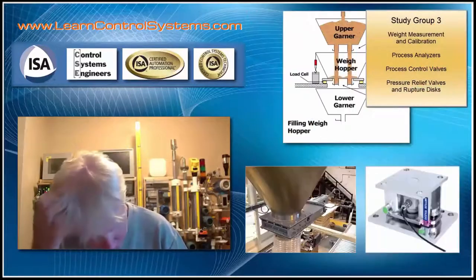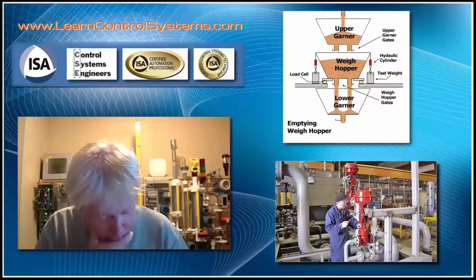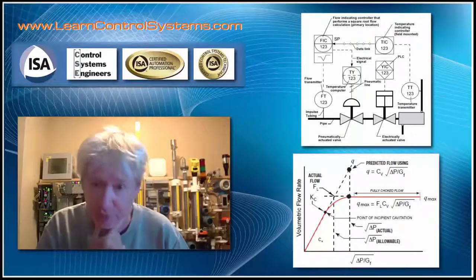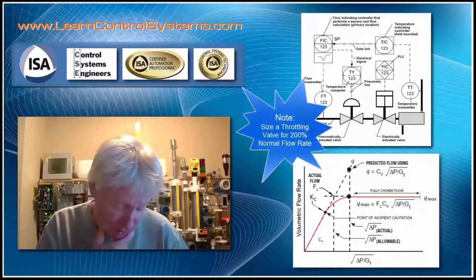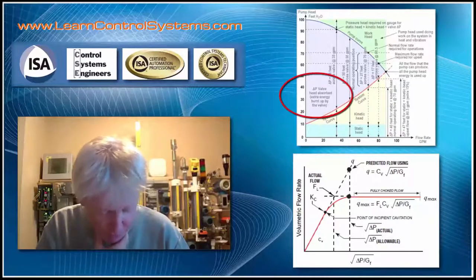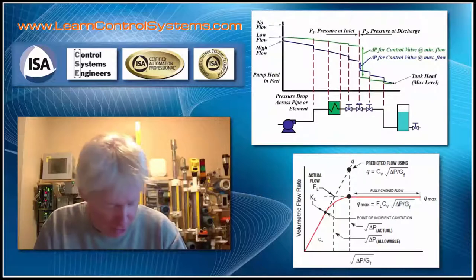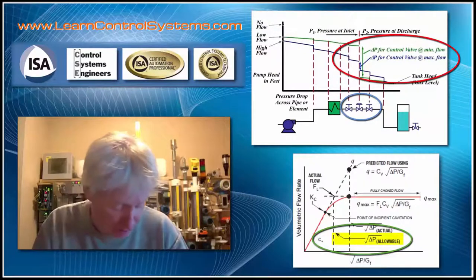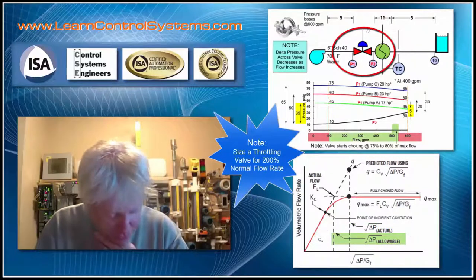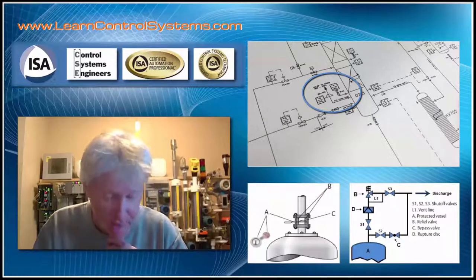Group 3 covers weight measurement and calibration, process analyzers, and process control valves — including how to size them. Your process control valves make a world of difference based on pressure and system conditions. If we don't understand the pressures in our system, we won't get the proper pressure differential across the valve. Pressure differential times area equals force — it's the driving force that accelerates the fluid. Too much pressure will actually cause flow to stagnate and not pass through the valve.